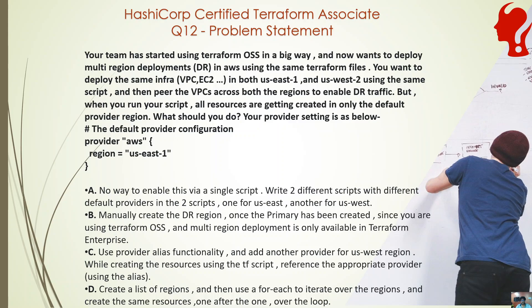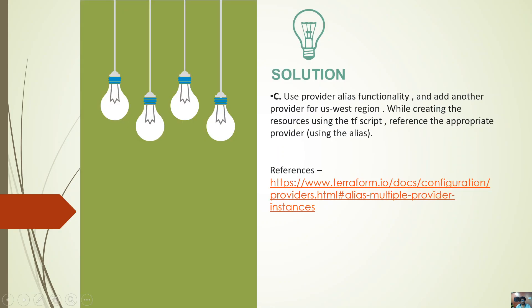Option D suggests creating a list of regions and using a for-each to iterate over them and create the same resources in a loop — for example a region array where one element is US-East-1 and another is US-West-2. This is not possible because none of the Terraform resources take region as a parameter. They rely on the provider setting — specifically which region the provider is configured with — so iterating over a loop of regions does not work.